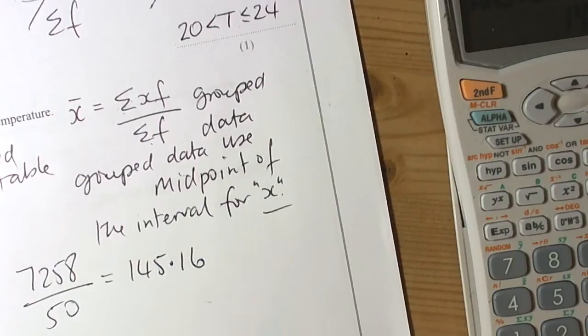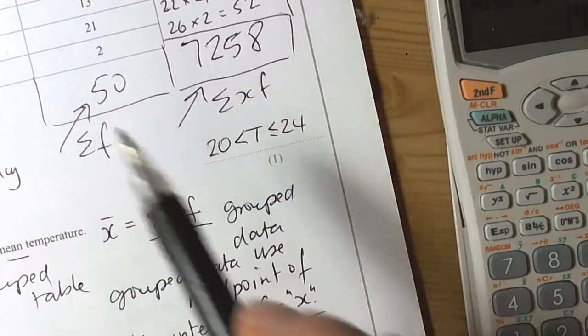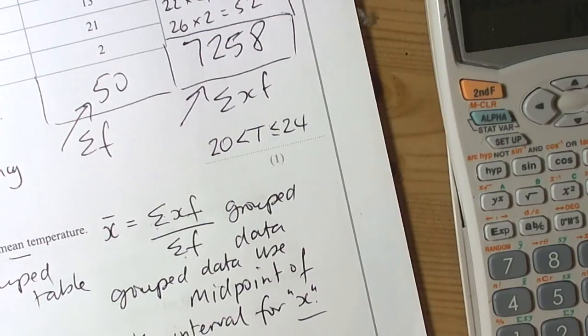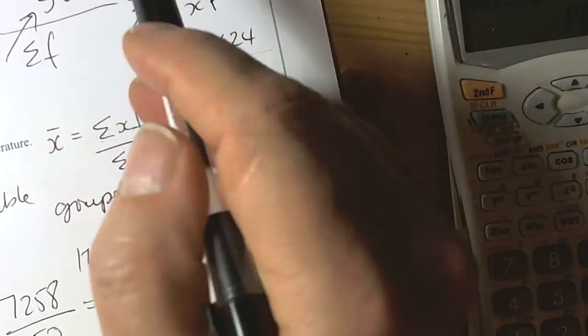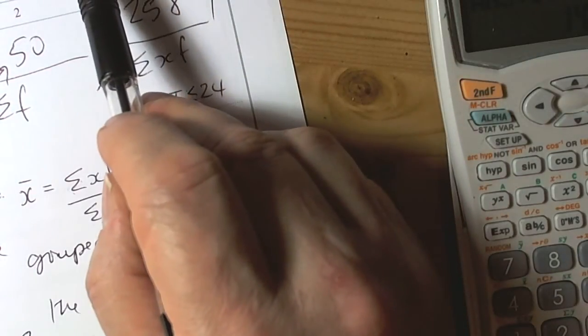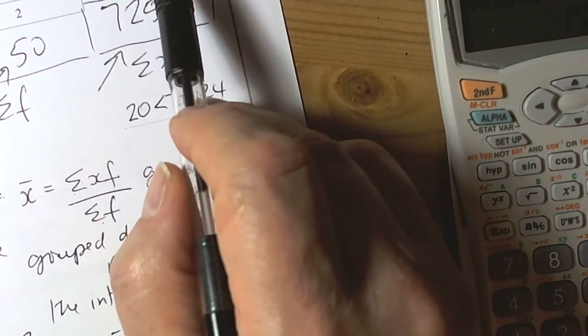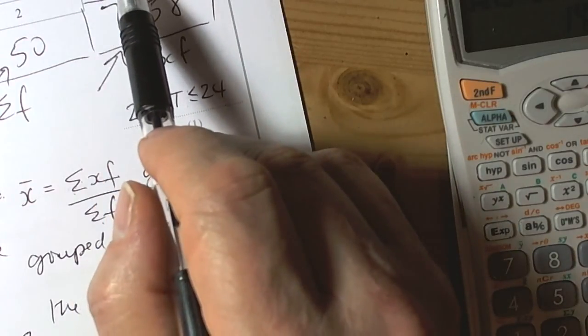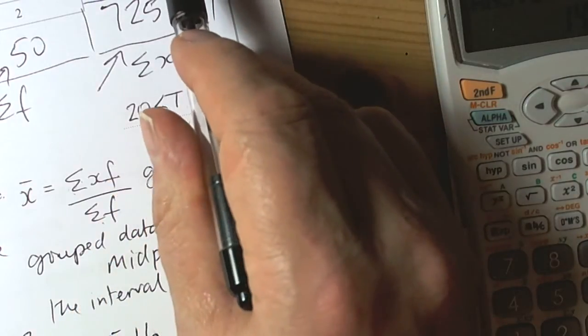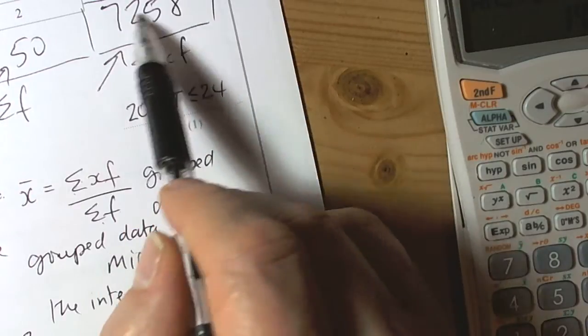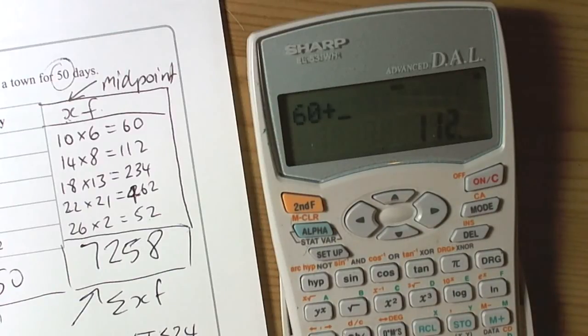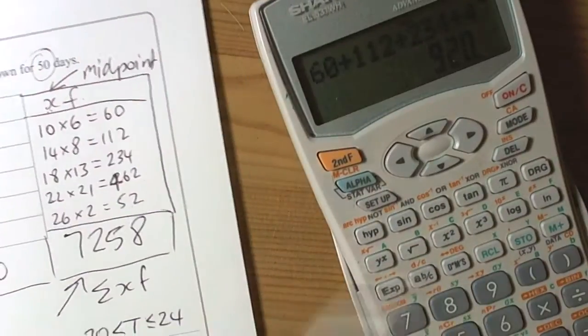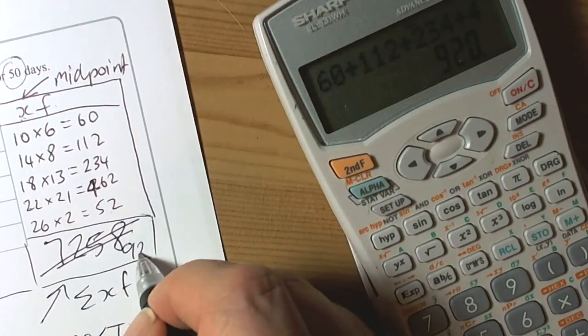So here, 145.16. Leave the decimal because averages, to compare, we do use the decimals. So 145. Now we can look at that answer and then we can look at our temperatures, and we can see that something's not quite right here, because this answer is way over any of the temperatures here. So something's been done wrong. So let's have a look: 10 times 6, 14 times 8, 18 times 13, 22 times 21, 26 times 2. So when we add those up, we can see that it was nowhere near 7000. So obviously did something wrong in the adding. So 60 plus 112 plus 234 plus 462 plus 52 equals 920.